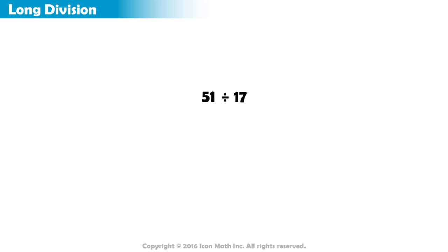Let's set up for our division by drawing the long division symbol. We write our dividend, 51, inside the division symbol, and our divisor, 17, on the left of it.